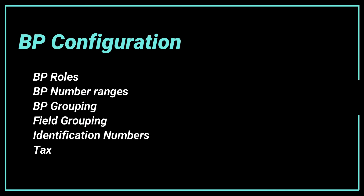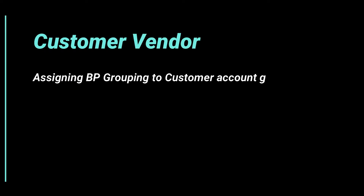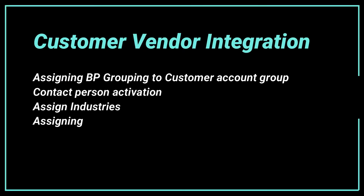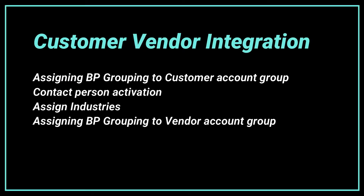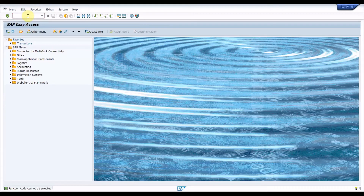The first set is business partner configuration, which holds BP roles, BP number ranges, BP grouping, field groupings, identification numbers, tax numbers, industry systems, etc. The second set is master data synchronization with customers and vendors, which holds the assignment of BP grouping and customer account groups, contact person activation, industry assignment, and assignment of BP grouping to vendor account group. To set up business partner configuration, execute the transaction SPRO.